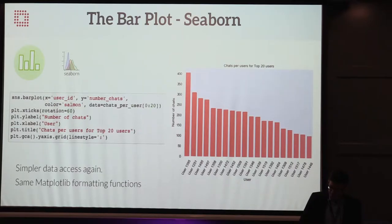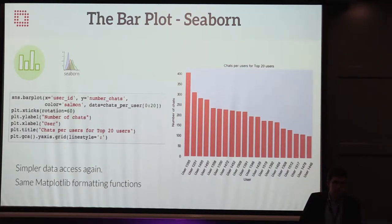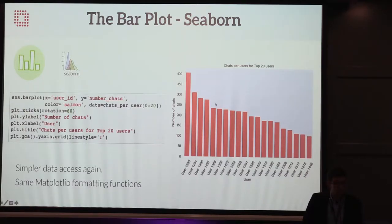Seaborn is faster again — one line at the top. It creates a Matplotlib output, so you can still use plt.xticks, plt.ylabel, plt.xlabel. But it looks a bit nicer — it's got a grey background, a nice salmon color — it's just a bit less brash.